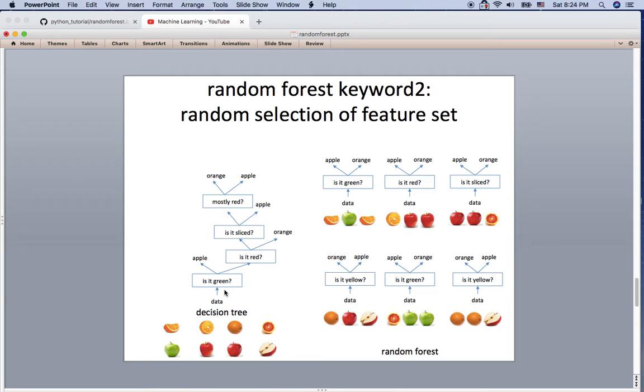But in the random forest, we are not choosing the best feature. We actually choose the feature randomly here. For example, at the first tree we are asking 'is it green?' but you can ask 'is it sliced or not?' I don't know which question is best or not, but it just selects the question randomly. That's the second keyword of the random forest.